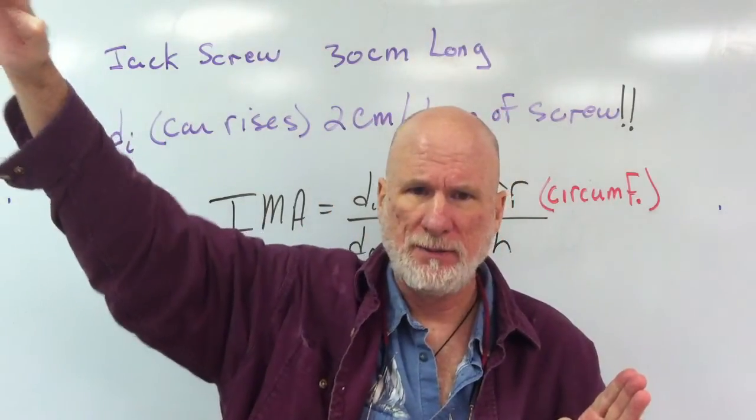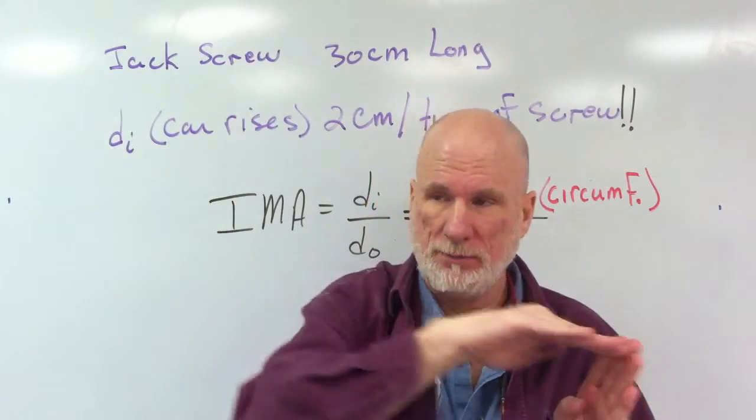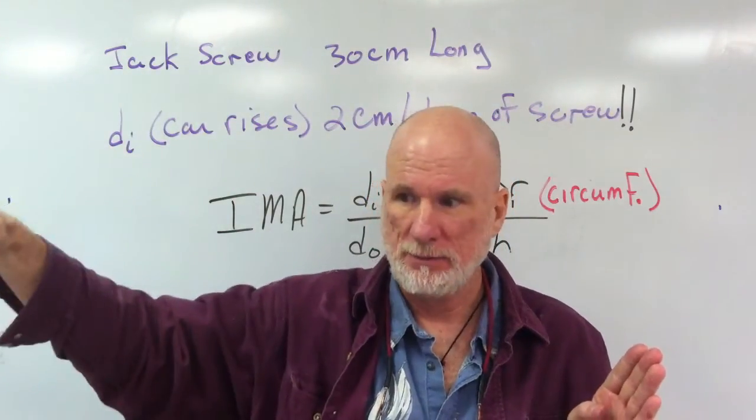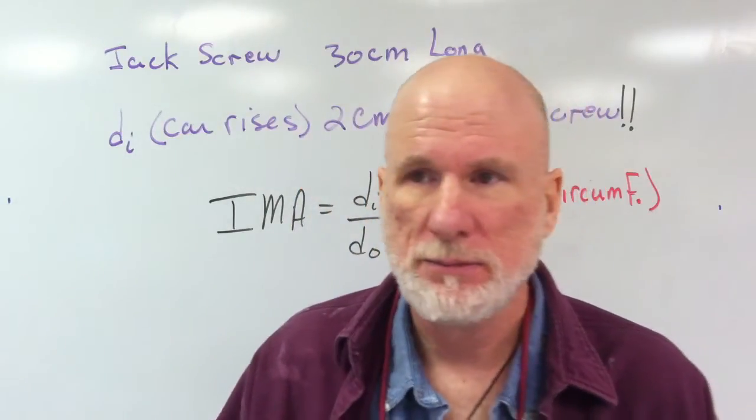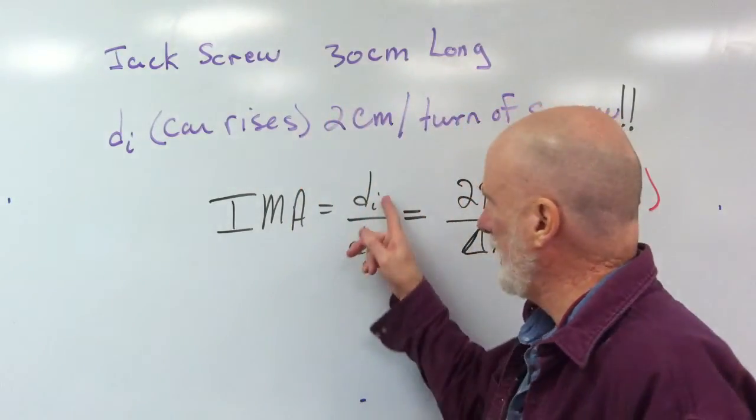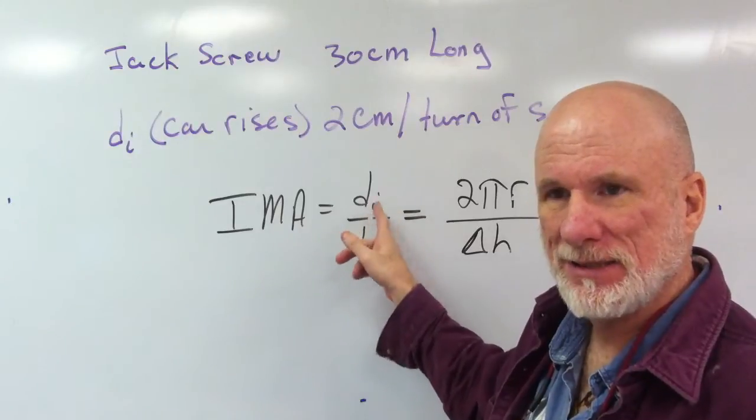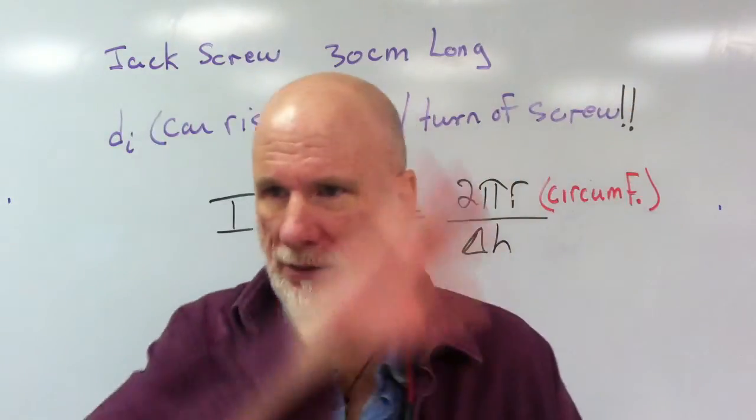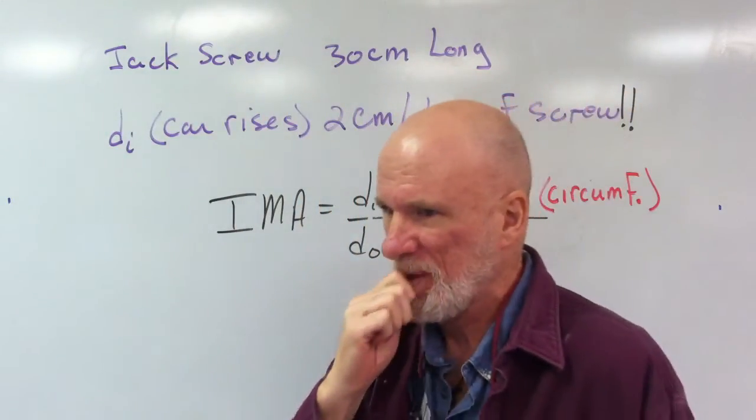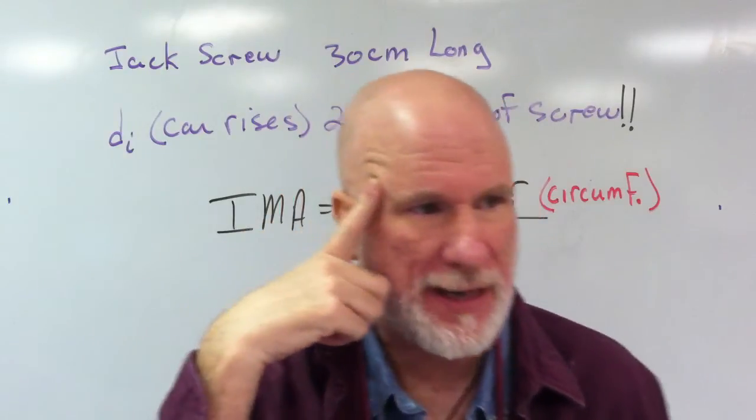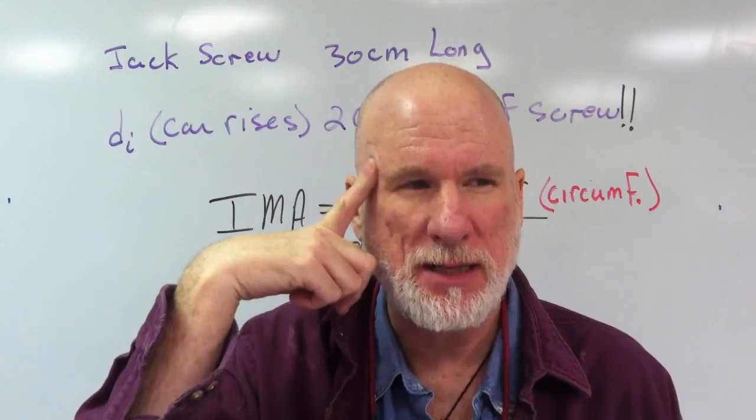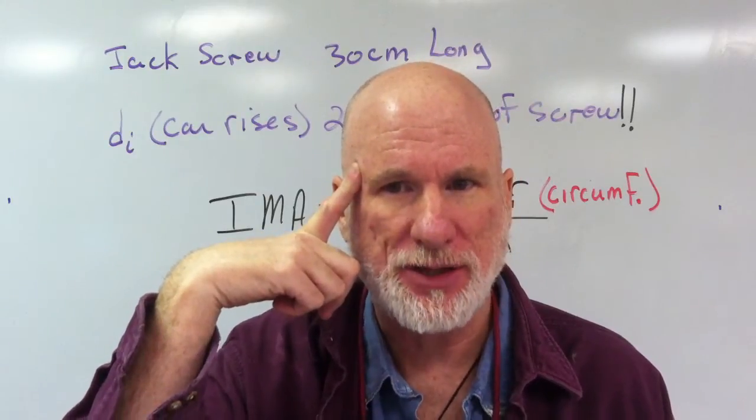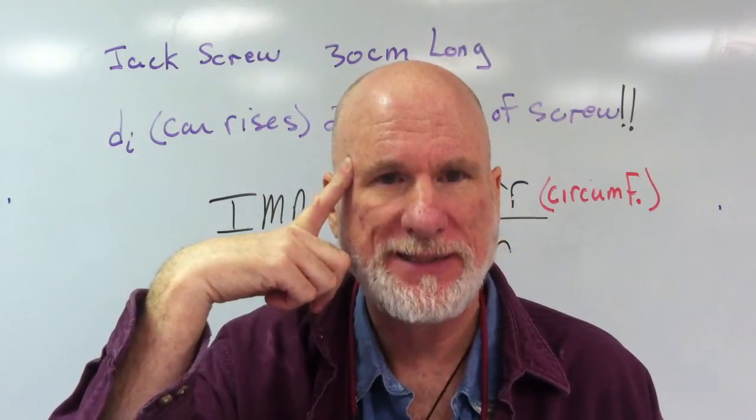If I have an incline plane, 100 meters long, really long, and only goes up 1 meter, 100 over 1. The ideal mechanical advantage is distances. Distances don't lie. There's no friction involved. So the actual mechanical advantage takes into account friction. The ideal mechanical advantage takes into account distances.